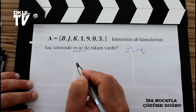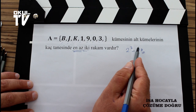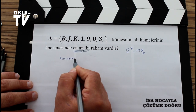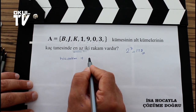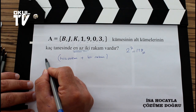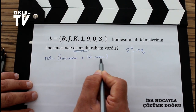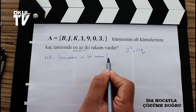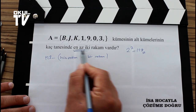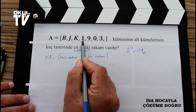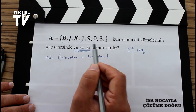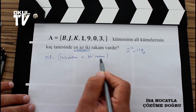Tüm 128 tane alt küme içerisinden, bakın yazıyorum: hiç rakam olmayanlar ile bir rakam olanları çıkarırsak, 128'in içerisinden hiç rakam olmayanlarla bir rakam olanları çıkarırsak, geriye 2 rakamlar, 3 rakamlar, 4 rakamlar kalır. Geriye kalan kısım zaten sorunun istediği kısım. Tek tek 1-9, 1-0, 1-3, 9-0, 9-3, 0-3 gibi kombinasyonlara bakmaktansa hiç rakamlarla bir rakamlara bakmak daha kolay.